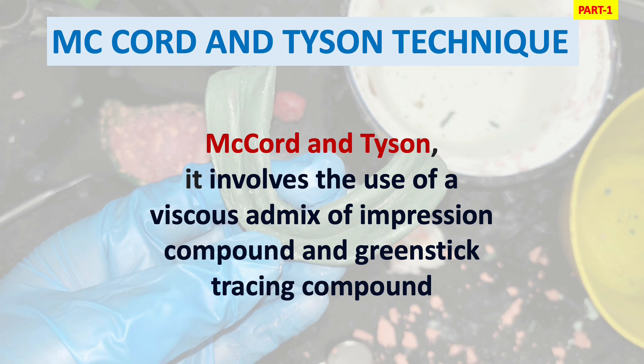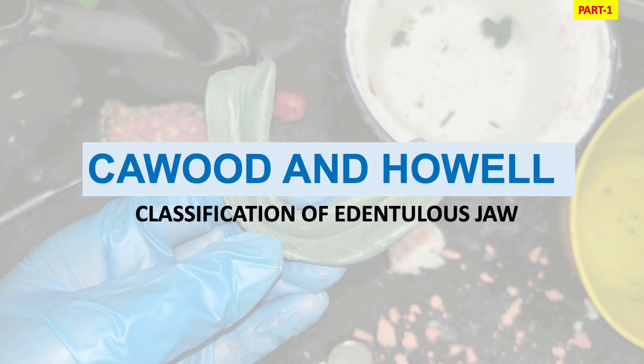The Coward and Howell classification is a classification of the edentulous jaw used to identify the height and width of the residual alveolar ridge of the edentulous patient. We can also say it is a classification of the change of shape of the alveolar process of the mandible and maxilla. They divide the ridges into Class 1 to Class 6, that is six classes in total.